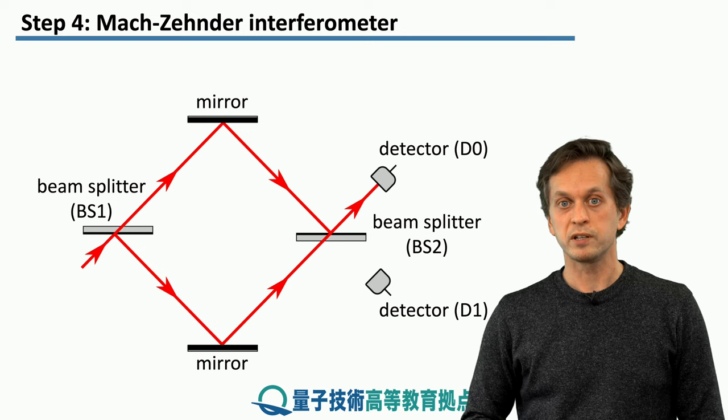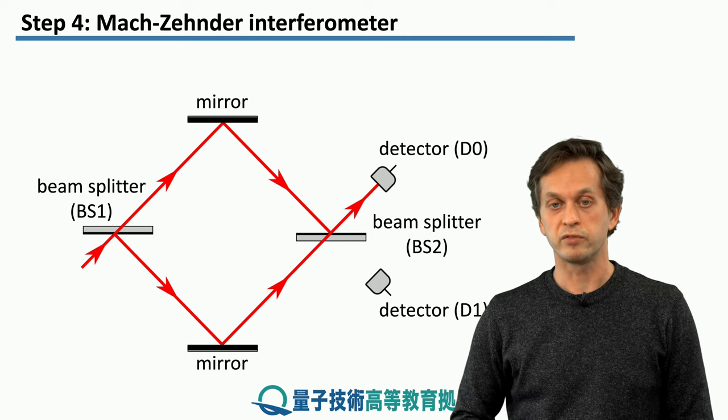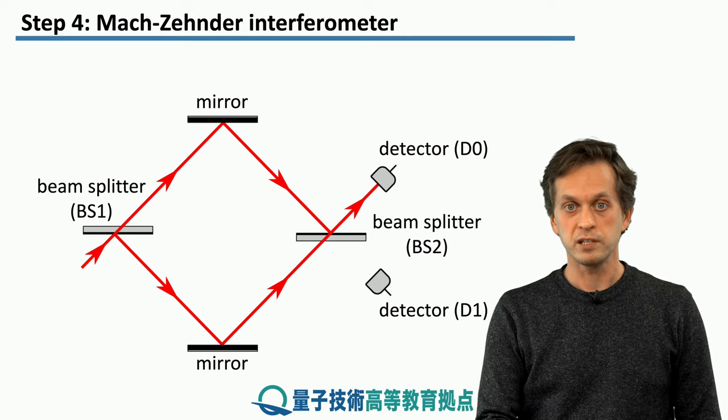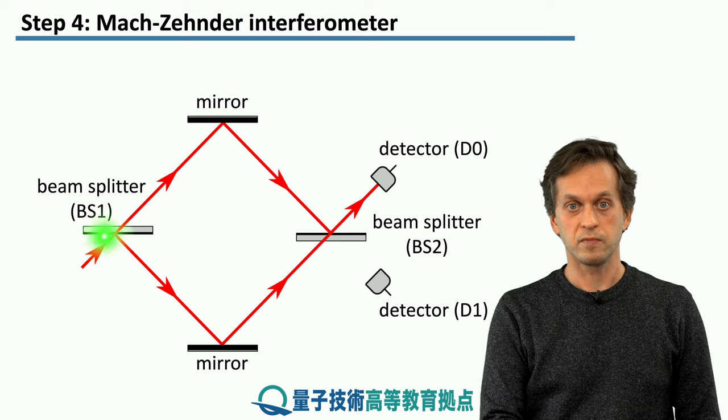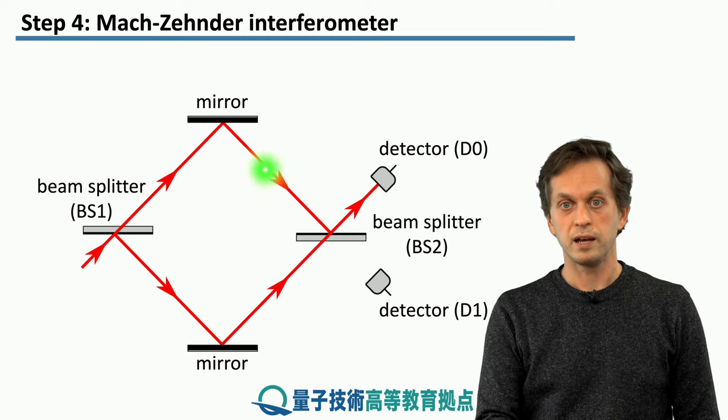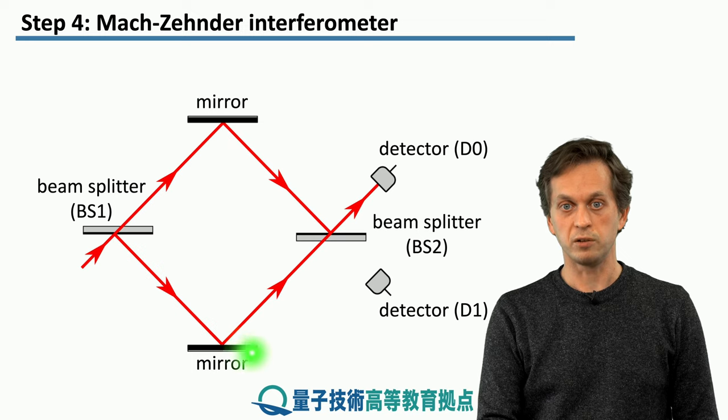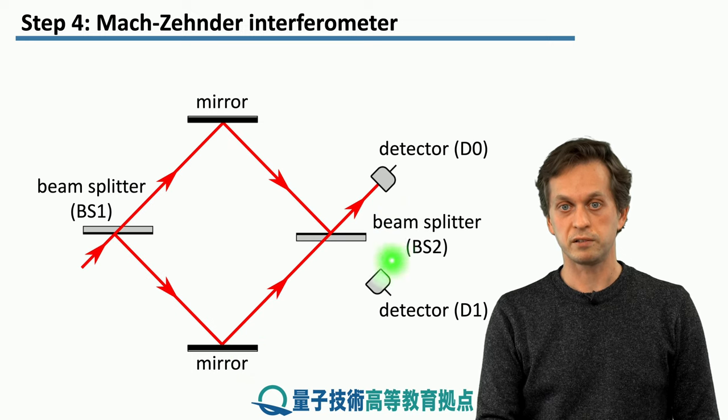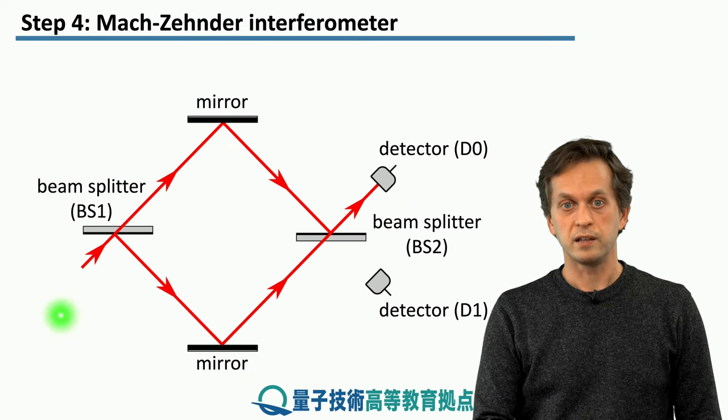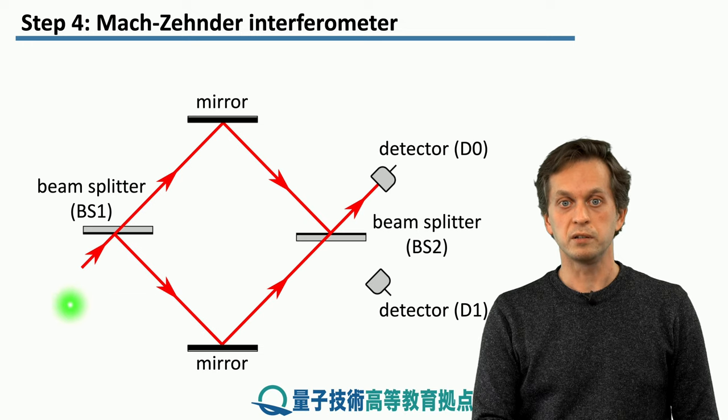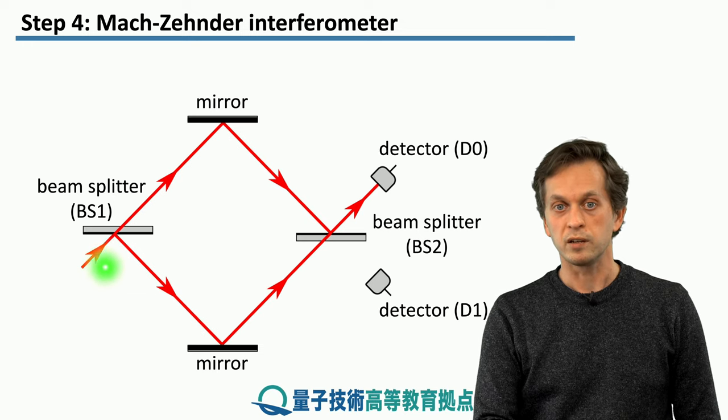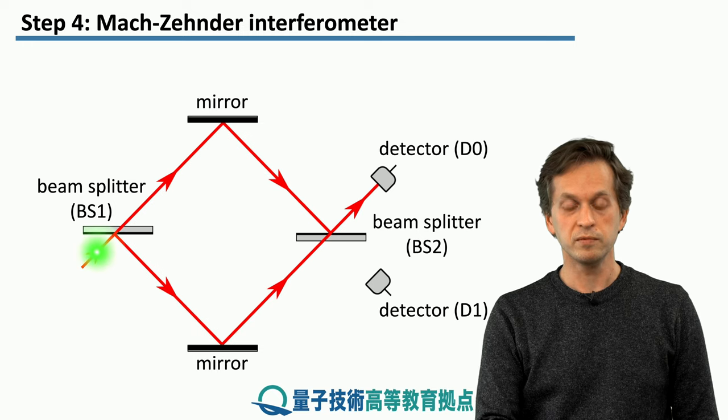Now, let's consider an optical instrument called a Mach-Zehnder interferometer. It consists of two beam splitters, which are BS1 and BS2. And two mirrors, over here and over here. And two detectors. And the games that we like to play with this Mach-Zehnder interferometer is that we feed in some light into the first beam splitter.